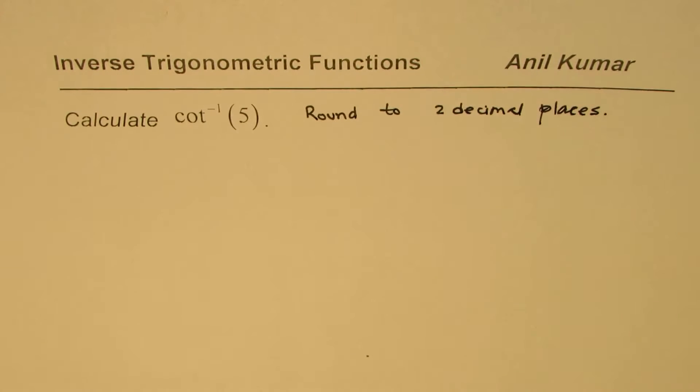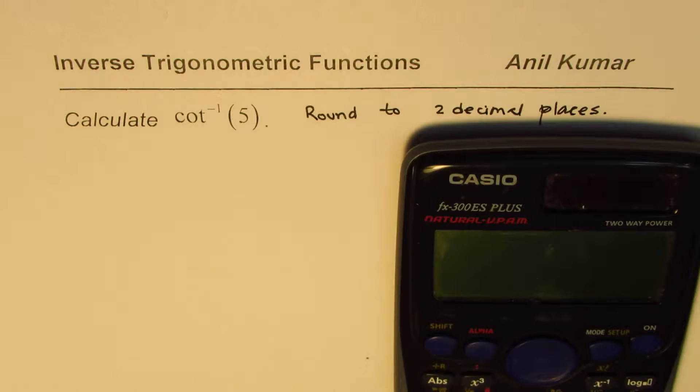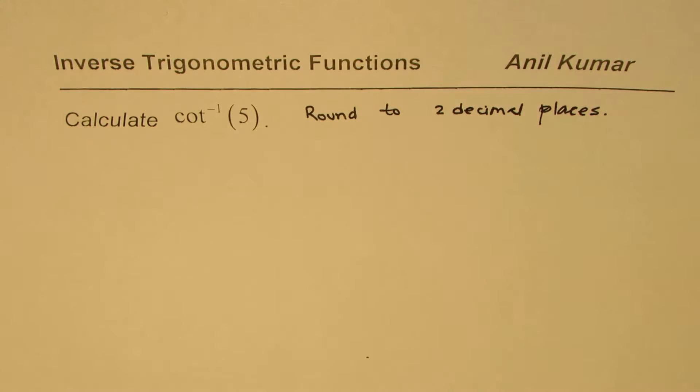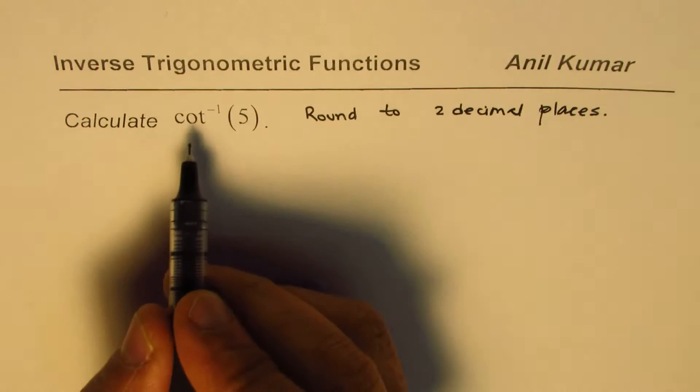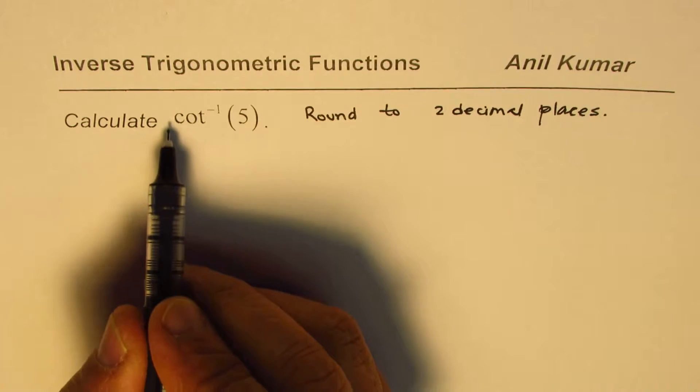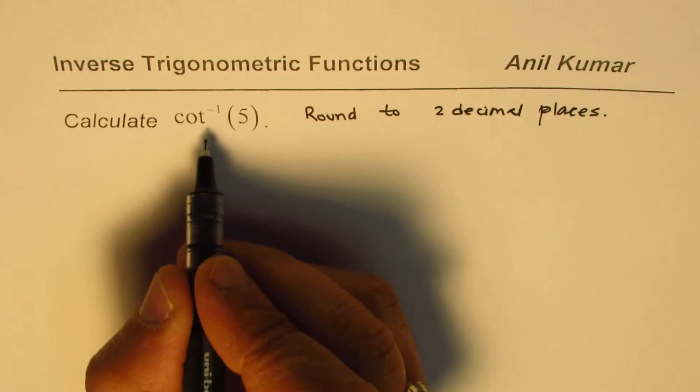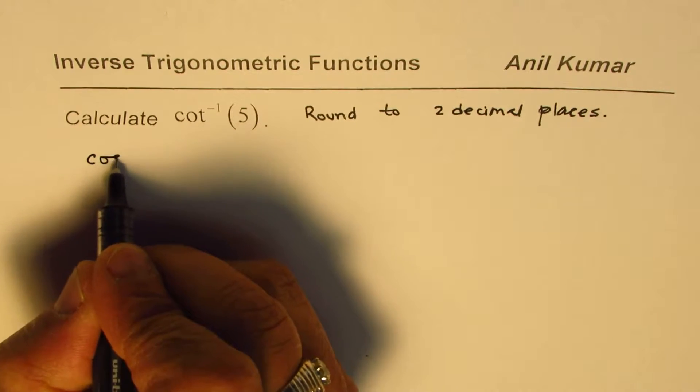As you know, the calculator has sine, cosine, and tan functions that can be used to calculate cot⁻¹(5). What function should be used to calculate this? It's very important to understand when cot⁻¹ is defined.